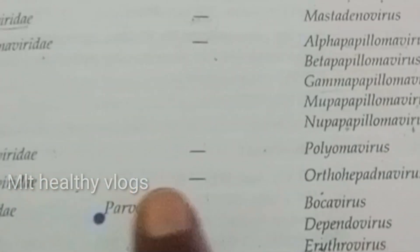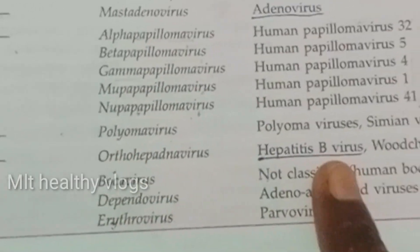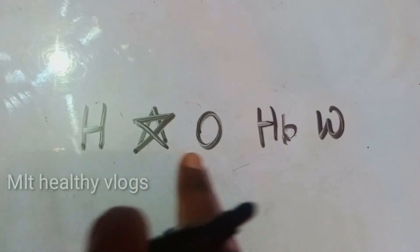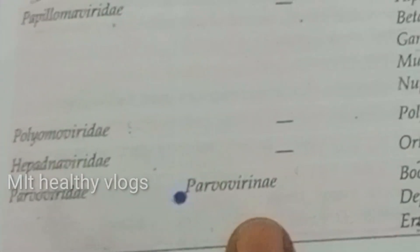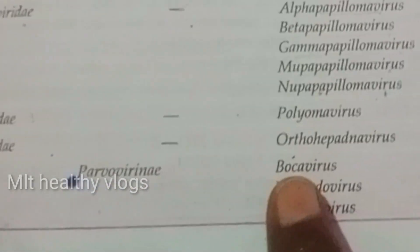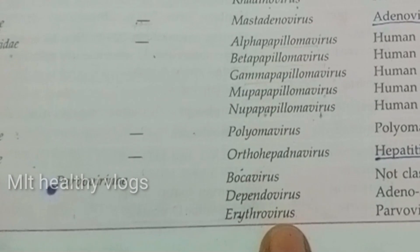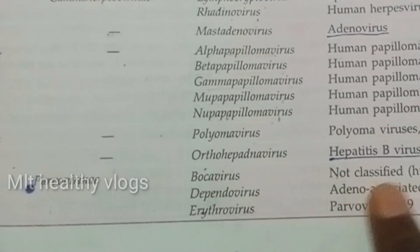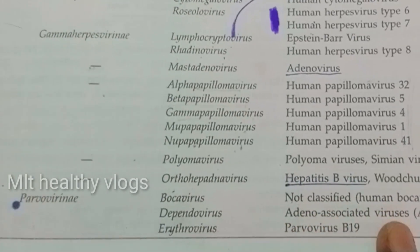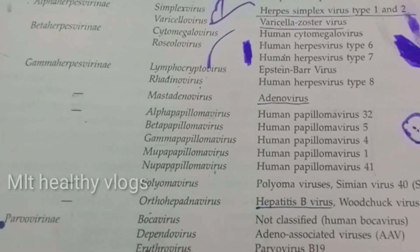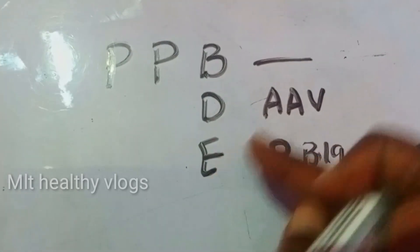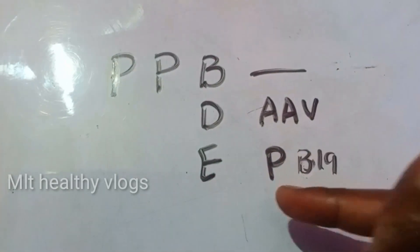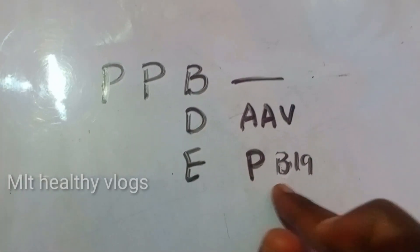Hepadnaviridae: the genus is Orthohepadnavirus and the species include Hepatitis B virus. Parvoviridae: the genera are Bocavirus and Erythrovirus. Species include: human Bocavirus (not classified), Adeno-associated Virus (AAV), and Parvovirus B19.